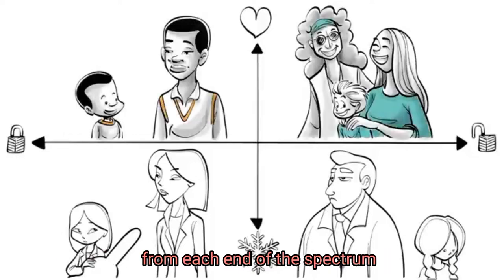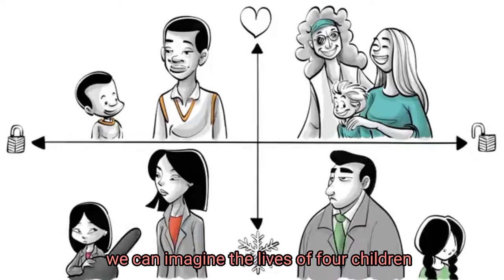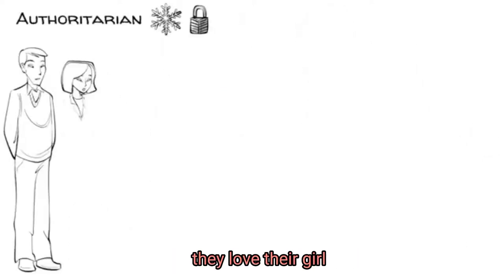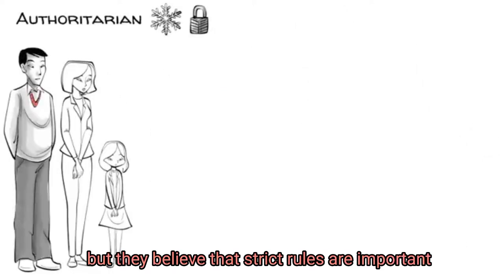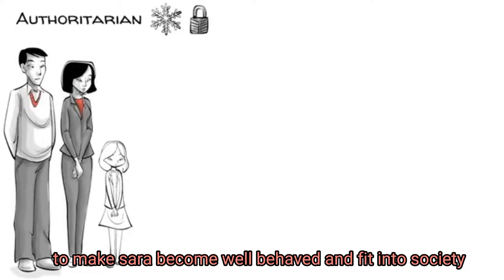To understand what it means to grow up with parents from each end of the spectrum, we can imagine the lives of four children. Sarah's parents are authoritarian. They love their girl, but they believe that strict rules are important to make Sarah become well-behaved and fit into society.